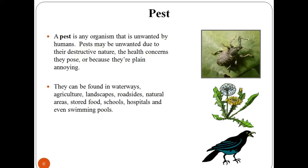A pest is a destructive insect or other animal that attacks crops, food, livestock, etc. Pests may be unwanted due to their destructive nature and health concerns they pose, or because they are simply annoying. They can be found in waterways, agriculture, landscape, road sites, natural areas, stored food, schools, hospitals, and many other places.